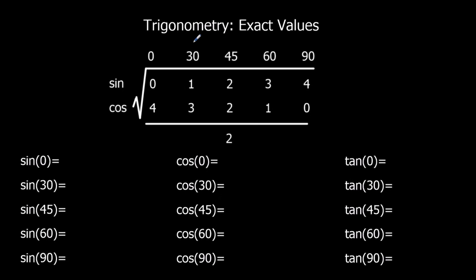I've done a video previously about using triangles to remember these values, and this is a different method. What we've got here is a little table that you can remember to write down the exact values. We've got sin and cos here, sin on top of cos, and a big square root sign, which just means each one of these within the square root sign is square rooted.